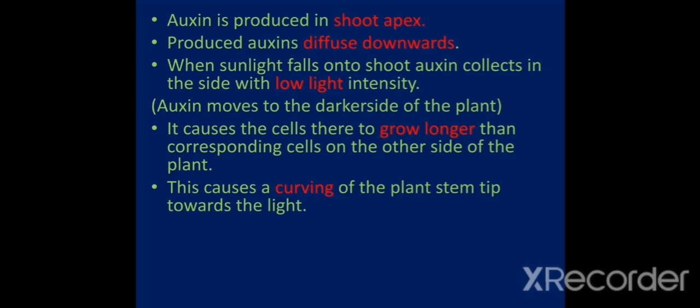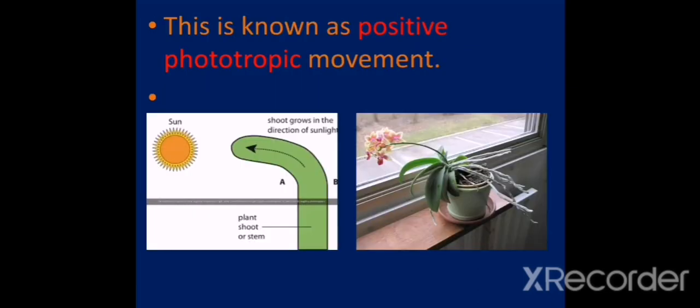This is the story. Auxin is produced in shoot apex. Produced auxins diffuse downwards. When sunlight falls onto shoot, auxins collect in the side with low light intensity. That is, auxin moves to the darker side of the plant. It causes the cells there to grow longer than corresponding cells on the other side of the plant. This causes a curving of the plant stem tip towards the light. Here you can see an orchid plant bending towards the sunlight. Now you know the reason, this is caused by the plant growth substance auxin. This type of a movement is known as a positive phototropic movement.